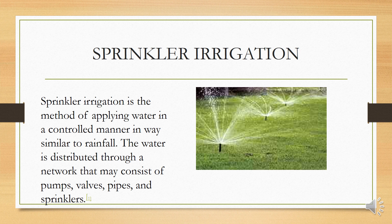The next type is sprinkler irrigation. Sprinkler irrigation is the method of applying water in a controlled manner, similar to rainfall. The water is distributed through a network that may consist of a pump, pipes, and sprinklers. In agriculture areas, sprinklers are set up so that water is delivered in the form of rain. The components include a pump, pipes, and sprinklers. This is also one of the most common types of irrigation.